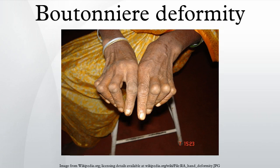Boutonniere deformity is a deformed position of the fingers or toes, in which the joint nearest the knuckle is permanently bent toward the palm while the farthest joint is bent back away. It is commonly caused by injury or by an inflammatory condition like rheumatoid arthritis, or genetic conditions like Ehlers-Danlos Syndrome.